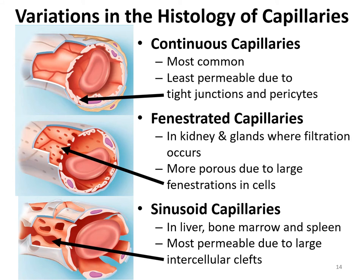The second type of vessel is a capillary. There's different histology in different capillary beds. There are three main types that differ in histological structure: one, continuous capillaries; two, fenestrated capillaries; and three, sinusoid capillaries. Continuous capillaries are the most common. The cells are quite close together with very little space in between, and therefore they are the least permeable.